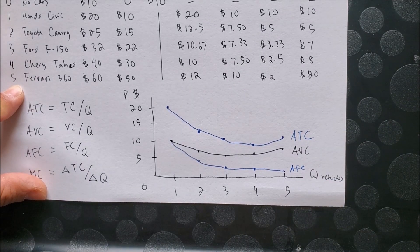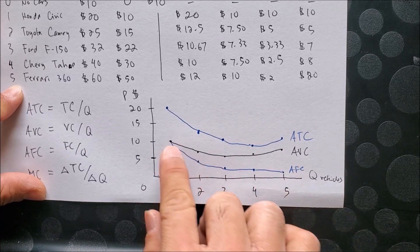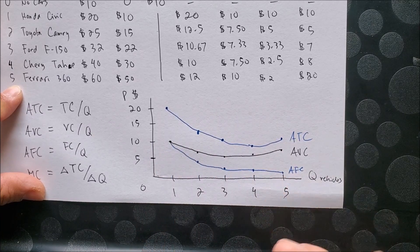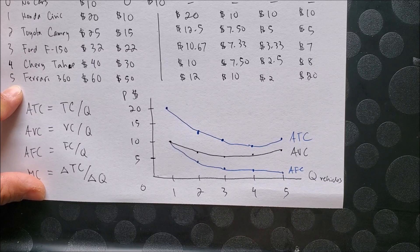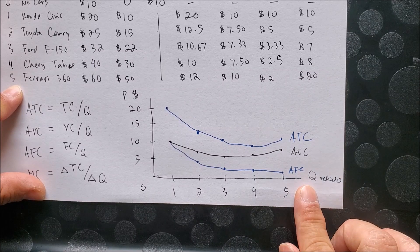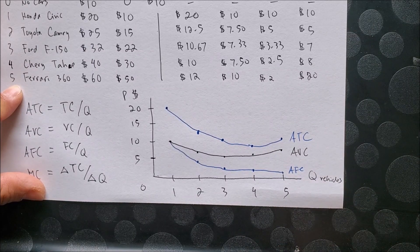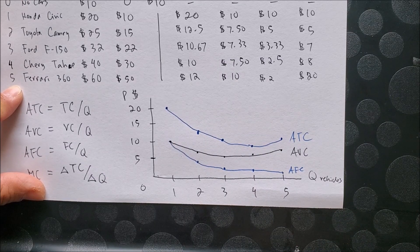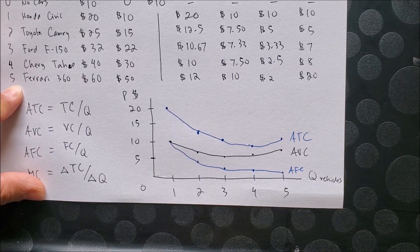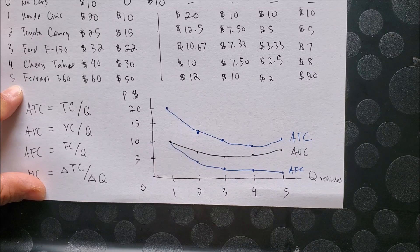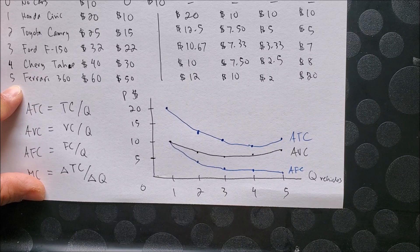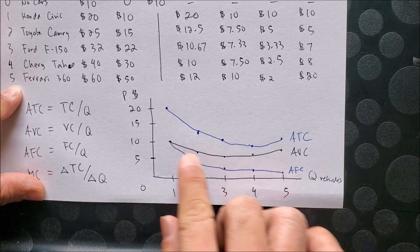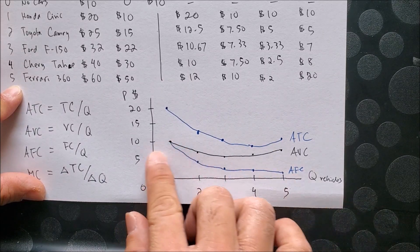And notice that AFC is going to decrease as you wash more vehicles. And this would make sense since your fixed costs on the lease of the van is $10. If you were to wash six, seven, eight, or more vehicles, the fixed costs you are paying will be less. Because now you're able to compensate for the amount of $10 per day for the vehicle that you're leasing. So AFC is going to decrease as you continue to wash more vehicles.